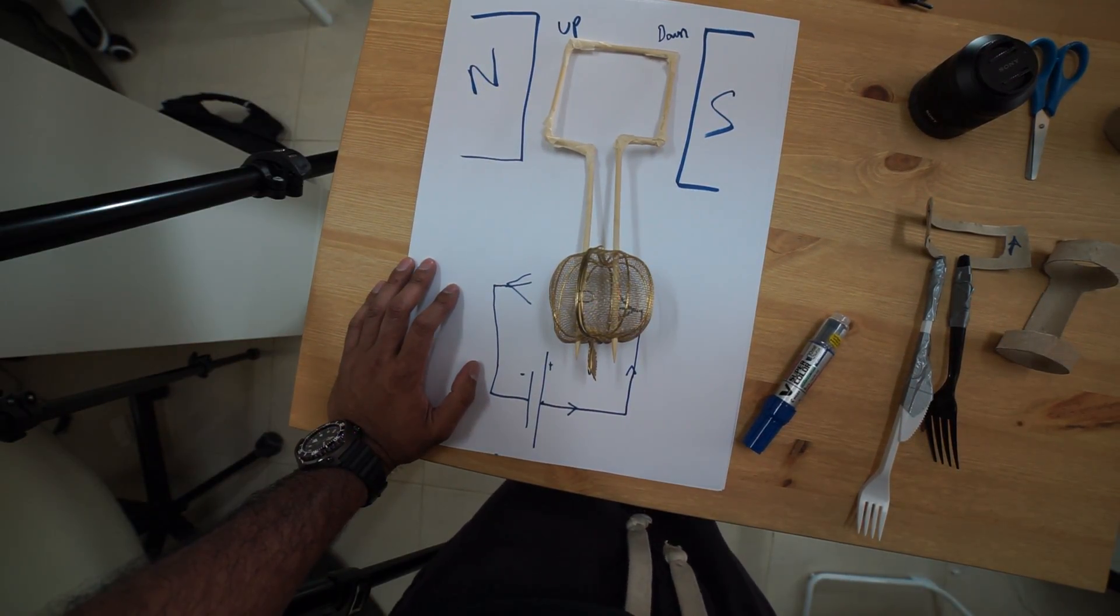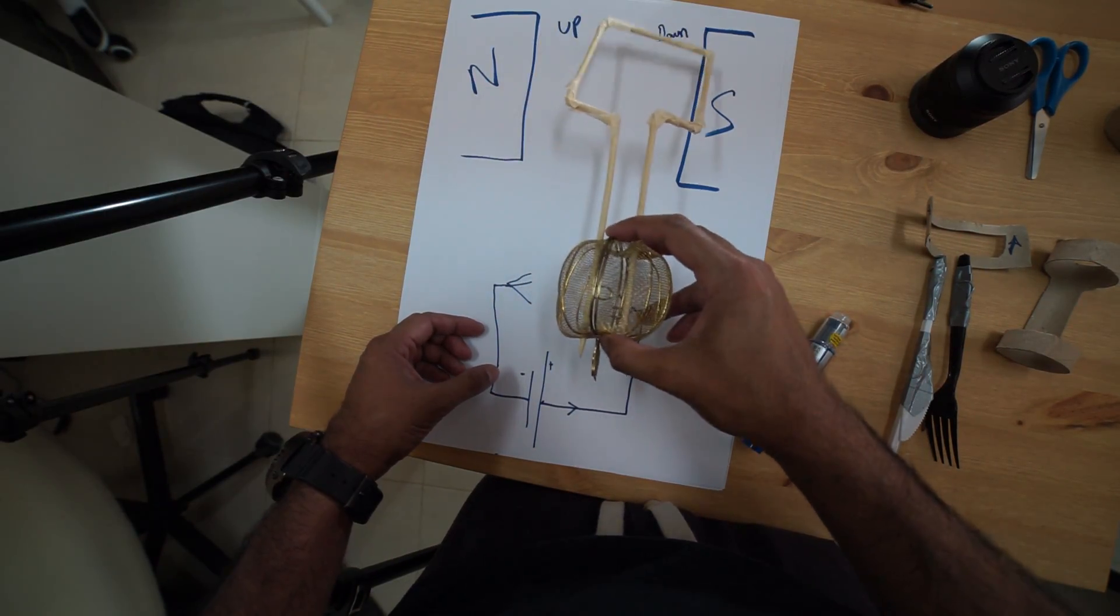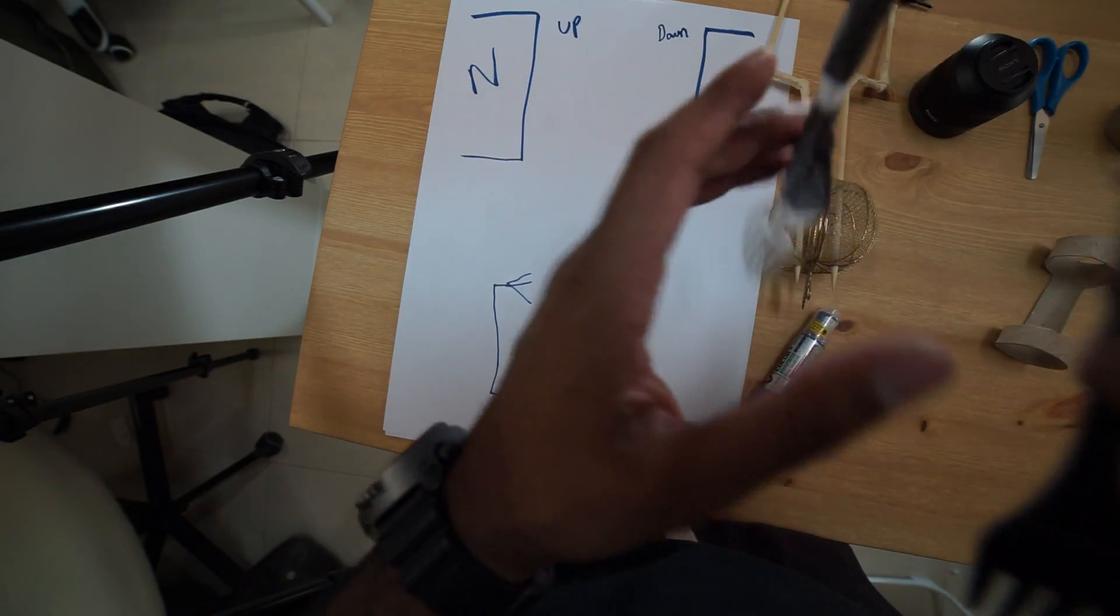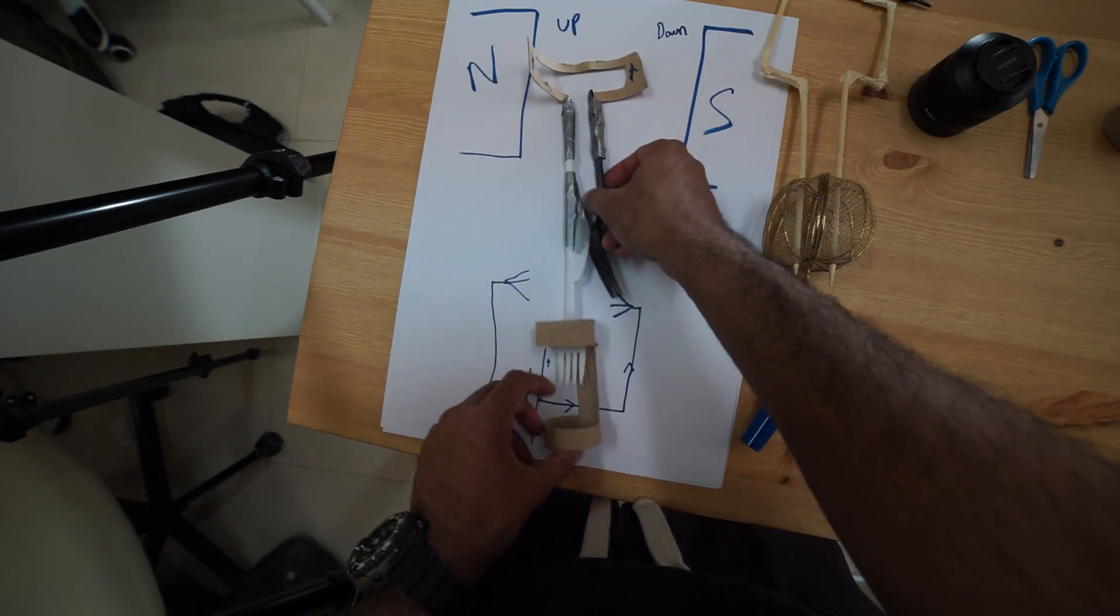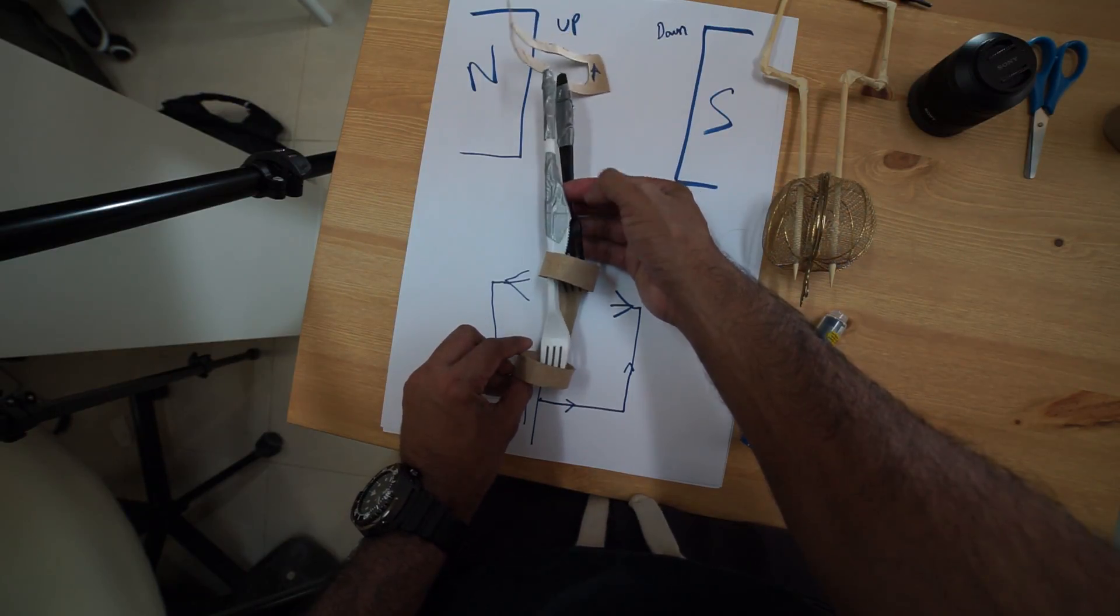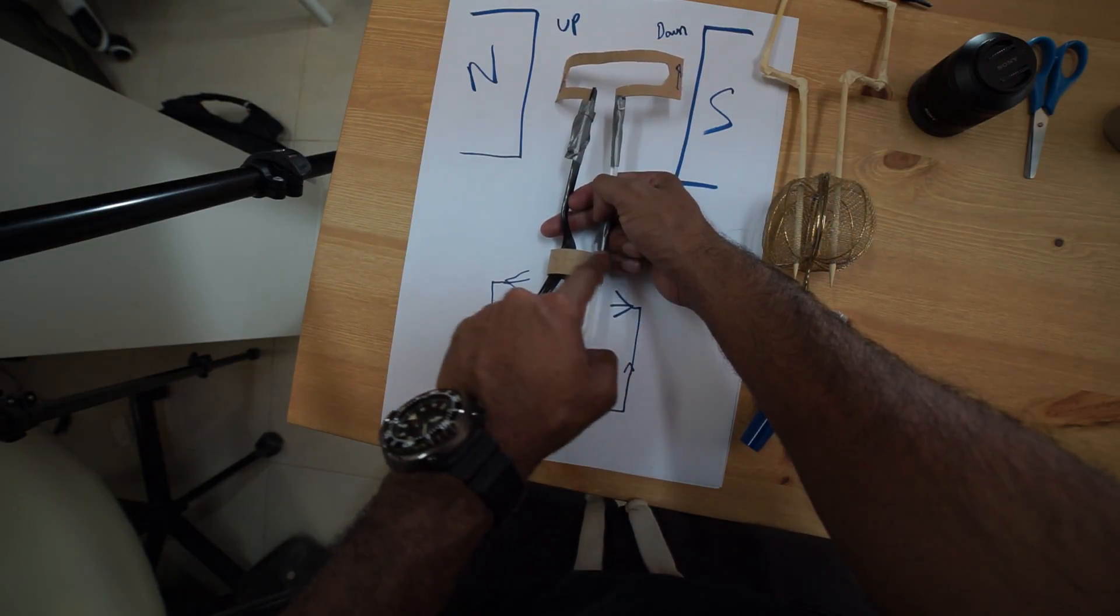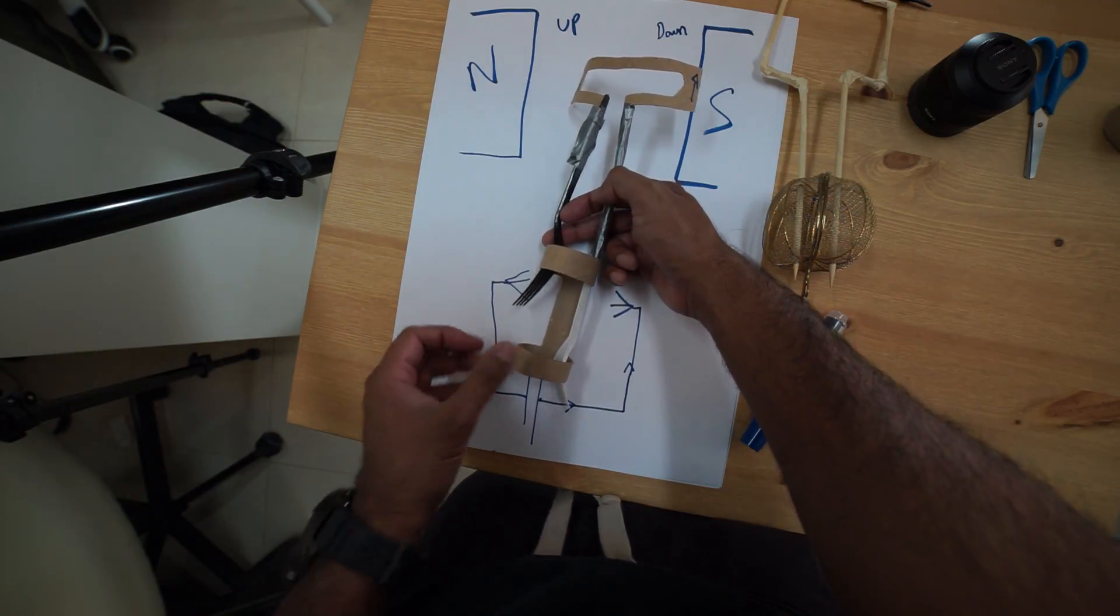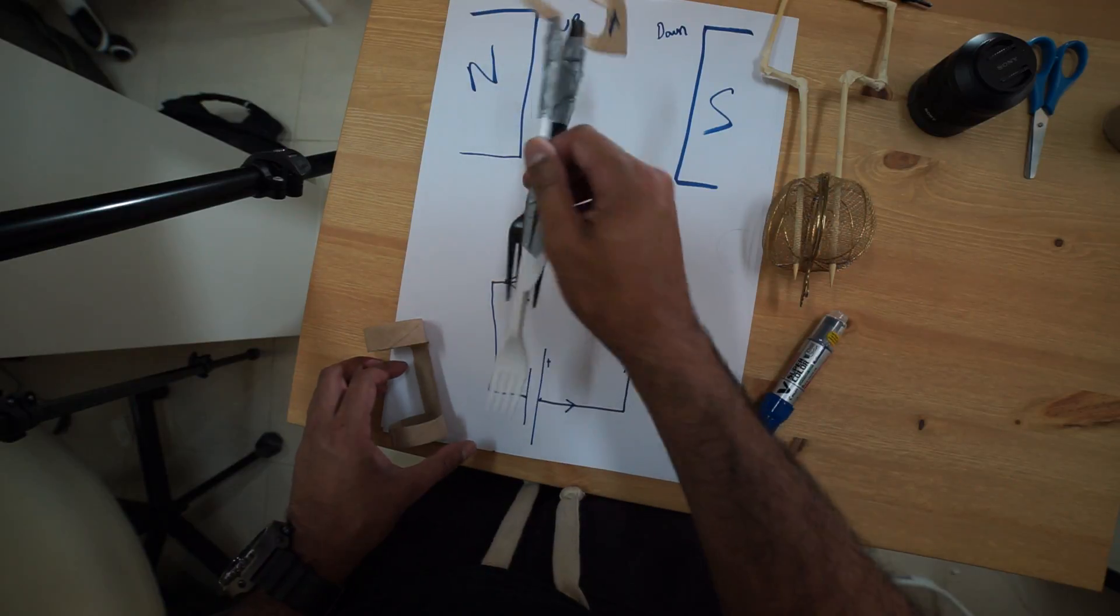Now some people get this confused with the other one, the AC generator. In the AC generator you've got a slip ring arrangement, so here's an old friend again like this. Now what would happen is if this was to go down, the current would then go into this one. So what's happening is the current is changing direction.